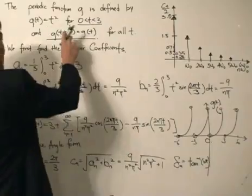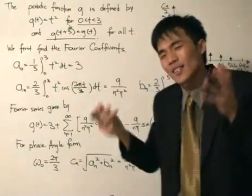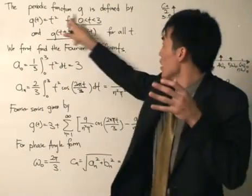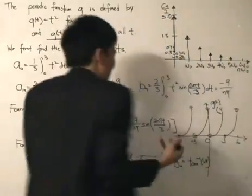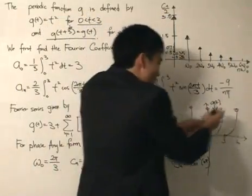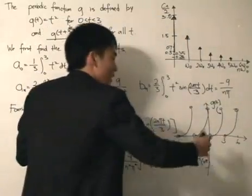But what does this statement tell us? This tells us that now the function g has a period of 3, so we can just take the same function from 0 to 3 and repeat itself, or translate itself. If we have to do it, we'll do it this way - the graph goes here and it goes backwards. It goes on for the whole real line.